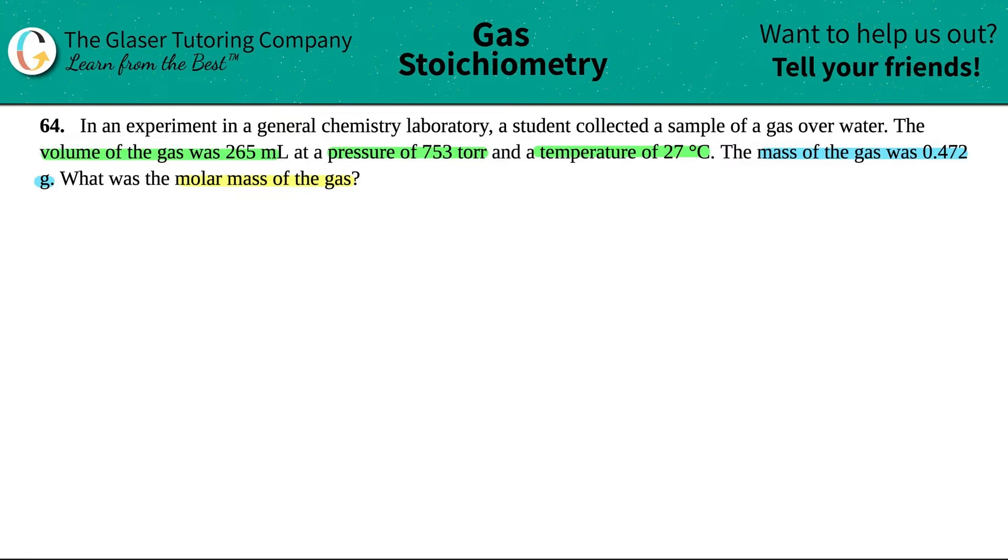Okay, so let's list out everything that we got. We have a volume of the gas, V = 265 mL, at this pressure P = 753 torr, and the temperature T = 27 degrees Celsius. The mass of the gas is 0.472 grams, and they're asking for the molar mass.